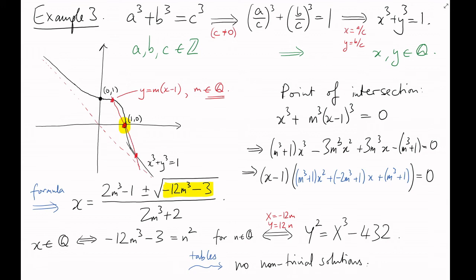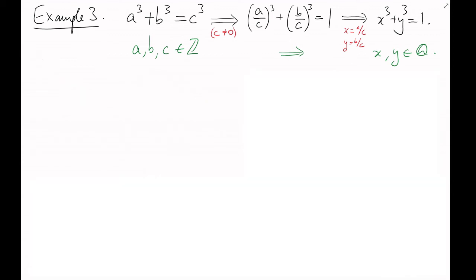But we could take this question a step further. Instead of asking whether there are integer solutions to Fermat's last theorem for exponent 3, we could ask whether there are Gaussian integer solutions, that is, solutions in Z adjoin i. This amounts to asking for Gaussian rational points on the curve, that is, points in Q adjoin i.